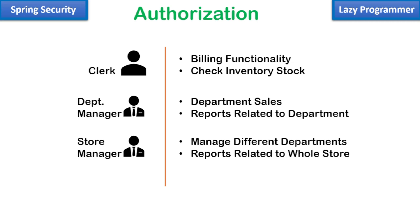Every time anyone accesses anything in the application, Spring Security makes the decision: should this user be allowed to do this operation or not, since all requests go through Spring Security. It also has a mechanism to block users from performing operations they are not allowed to do. The decision depends on who the user is and what they are trying to do. For example, a clerk cannot access the department reports as they will not have access to do so. This process of deciding whether a user can access a specific resource based on their role is known as authorization. For authorization, you need authentication first — you need to know who the user is before you can decide what they can or cannot do.